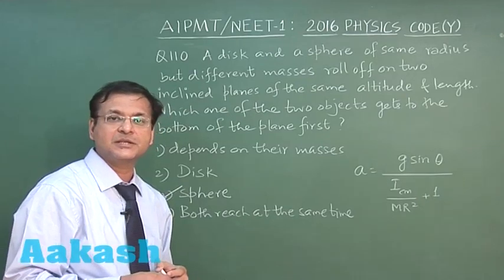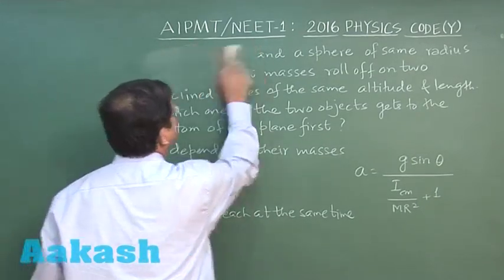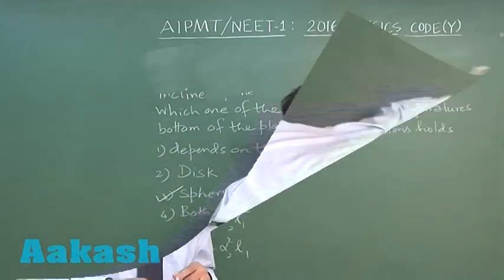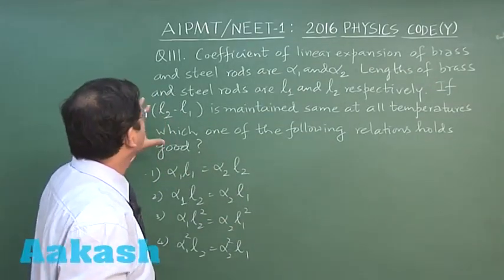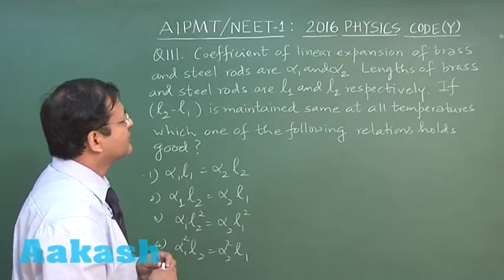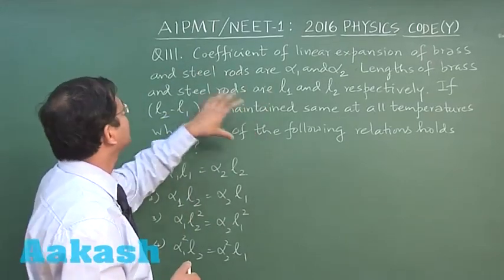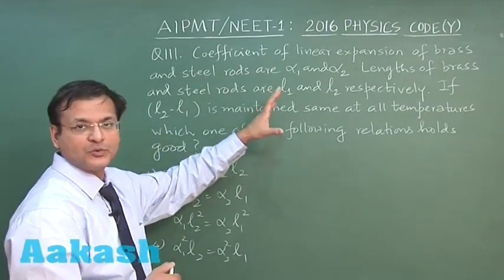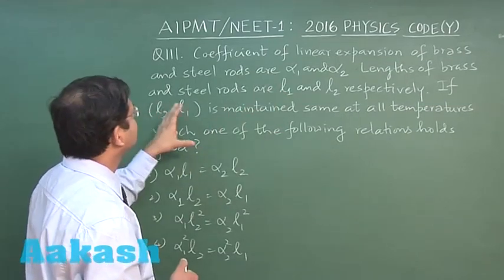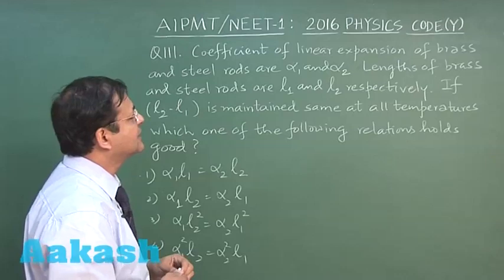Let us look at next question that is question 111. This question is based on thermal expansion. It is a very straightforward question and very common question. Many times it has been asked. Coefficient of linear expansions of brass and steel are given to you α₁ and α₂. Lengths of brass and steel rods that also has been given L₁ and L₂ respectively.